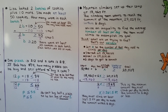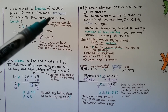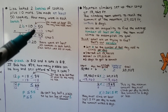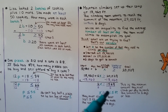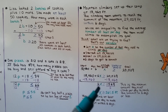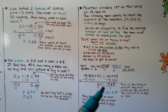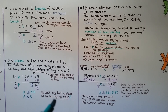Looking at these three examples: when a problem said "at least," we used a greater than or equal to sign — because that was the minimum amount needed to climb. When a problem was about how many he could buy "at most," we used a less than or equal to sign.